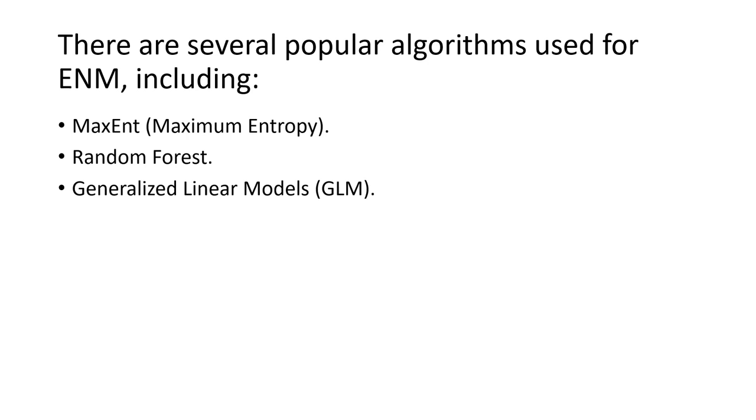Generalized linear models are statistical models that relate species occurrence to environmental variables, and they're widely used in ecological niche modeling because of their interpretability and ability to handle different types of response variables such as presence-absence or presence-only data.